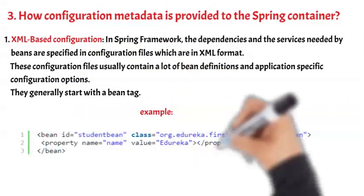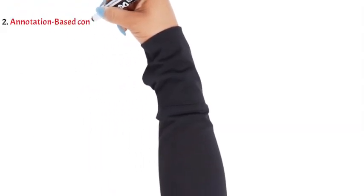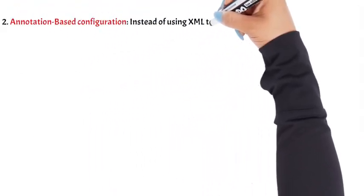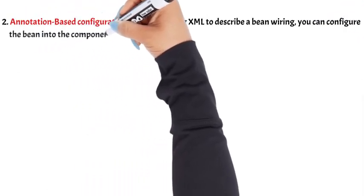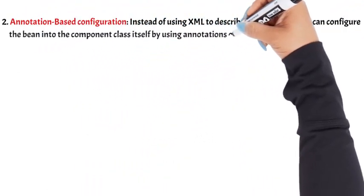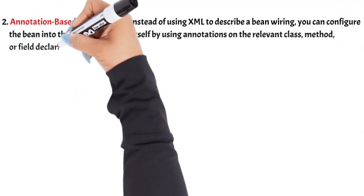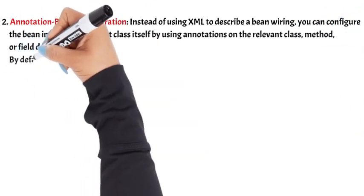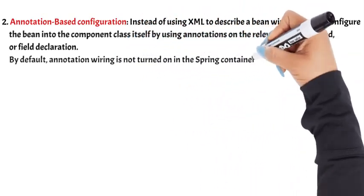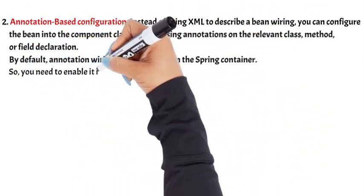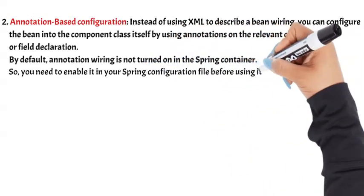For example. 2. Annotation-based configuration. Instead of using XML to describe a bean wiring, you can configure the bean into the component class itself by using annotations on the relevant class, method, or field declaration. By default, annotation wiring is not turned on in the Spring container. So you need to enable it in your Spring configuration file before using it. For example.